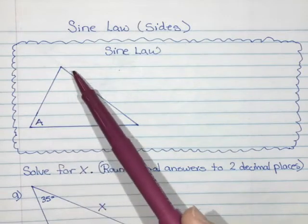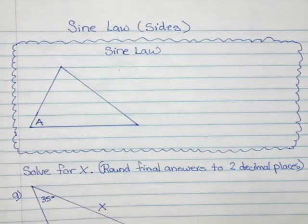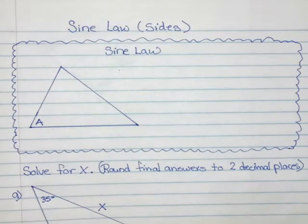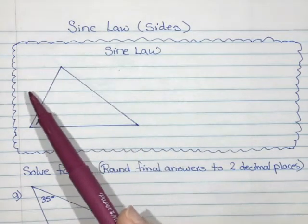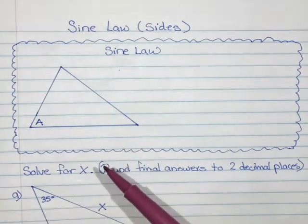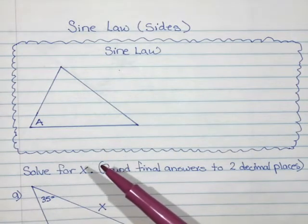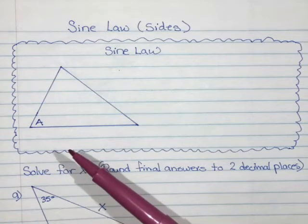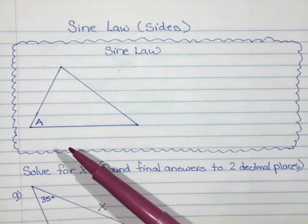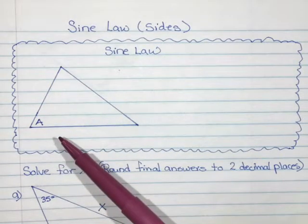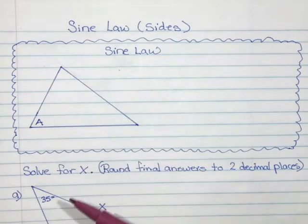You'll notice this triangle in my picture does not have a right angle, it doesn't have a little square in one of the corners. When doing sine law, we label our sides differently than when we do sine ratio. With right angle triangles, we labeled opposite, hypotenuse, and adjacent. Here I don't have a hypotenuse.